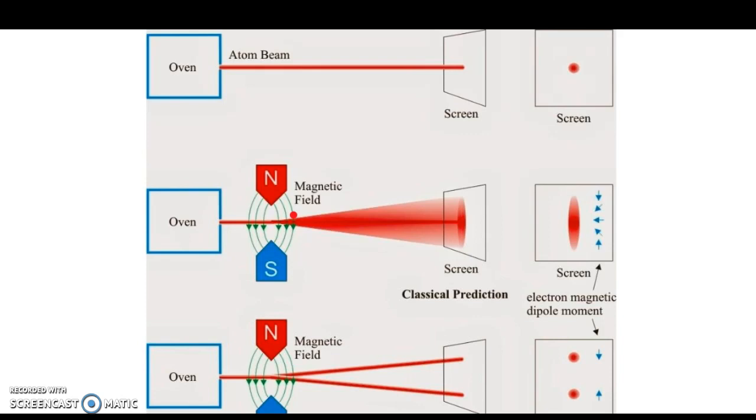Since the atoms flying out of the oven are randomly oriented, a magnetic field will make some atoms deflect up, some down, and some not at all. As such, the narrow beam shown in this diagram was expected to broaden into a fuzzy smear in the direction along the magnetic field, as shown in the middle diagram. The blue arrows show the orientation of the dipole moment that is deflected to the corresponding part of the red smear to its left.